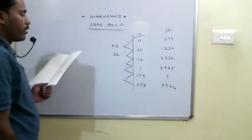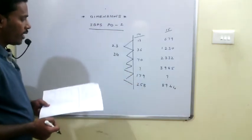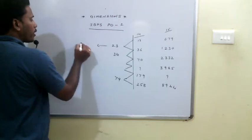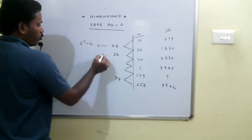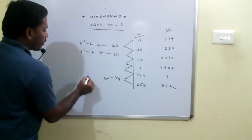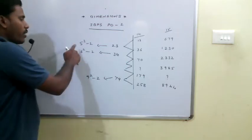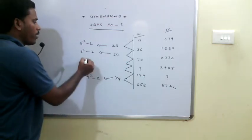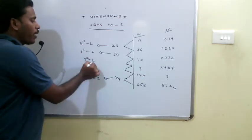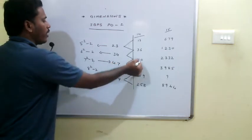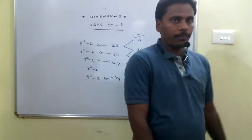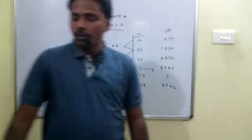For the next series, checking the difference between 179 and 258 gives 79. 25 can be expressed as 5 squared minus 2, 34 as 6 squared minus 2, and 79 as 9 squared minus 2. So the pattern is n squared minus 2, giving 7 squared minus 2 next, then 8 squared minus 2 is 47. 70 plus 47 is 117, which is the missing term of the series.